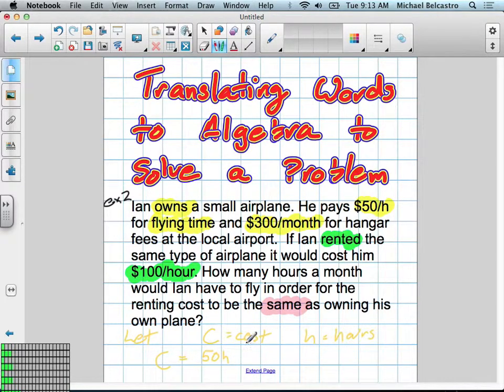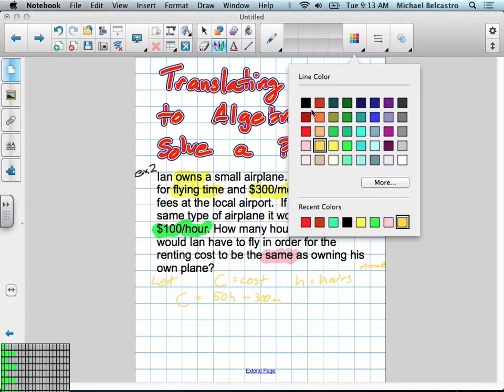So we're going to write it down as M is equal to months, but then we're going to come revisit that at the end. So plus $300 a month.